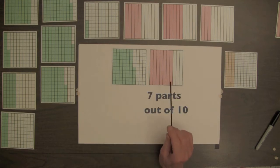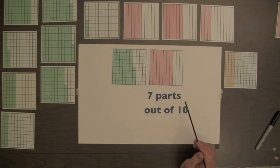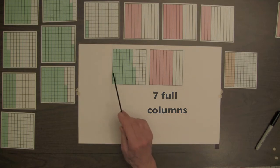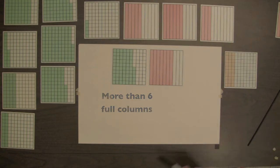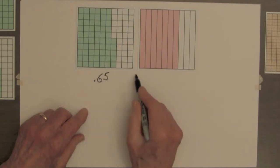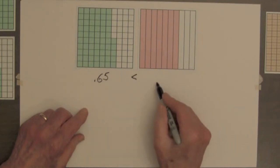These are hundreds. The red square has one, two, three, four, five, six, seven parts out of ten. So the red square has seven full columns. The green square has only six and a little bit more than six full columns. So we can say that the decimal sixty-five hundredths is less than the decimal seven tenths.